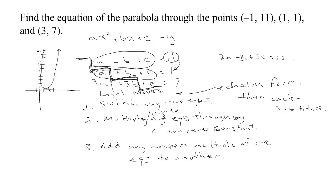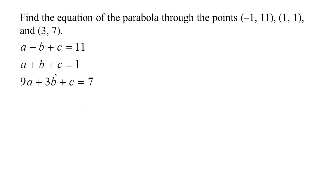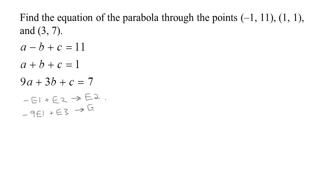Let's try those steps in this particular example. If I subtract the first equation from the second equation, the a in the second equation disappears — that's like multiplying the first equation by negative one and adding it to the second. Also, if I subtract nine times the first equation from the third equation, the a disappears there too. So I'm going to take negative one times equation one, add it to equation two to make a new equation two, and also take negative nine times equation one and add it to equation three to make a new equation three.